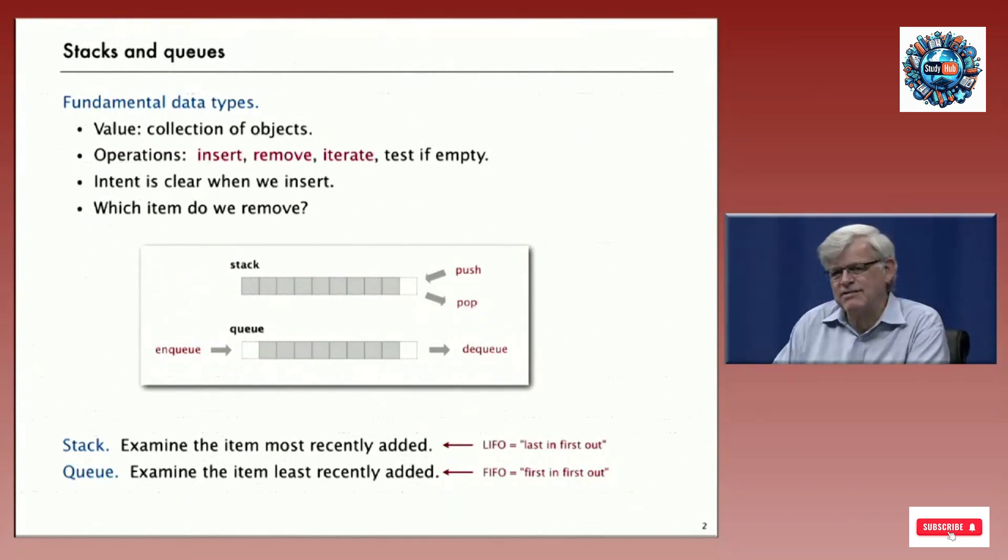The two fundamental classic data structures are the stack and the queue, which differ in the way the item to be removed is chosen. For the stack, we take out the item that was most recently added. The terminology we use is push to insert an item and pop to remove the item most recently added. That's also called the LIFO discipline, last in, first out. For queue, we examine the item least recently added. We call enqueue to insert an item and dequeue to remove an item. That's called the FIFO discipline, first in, first out.